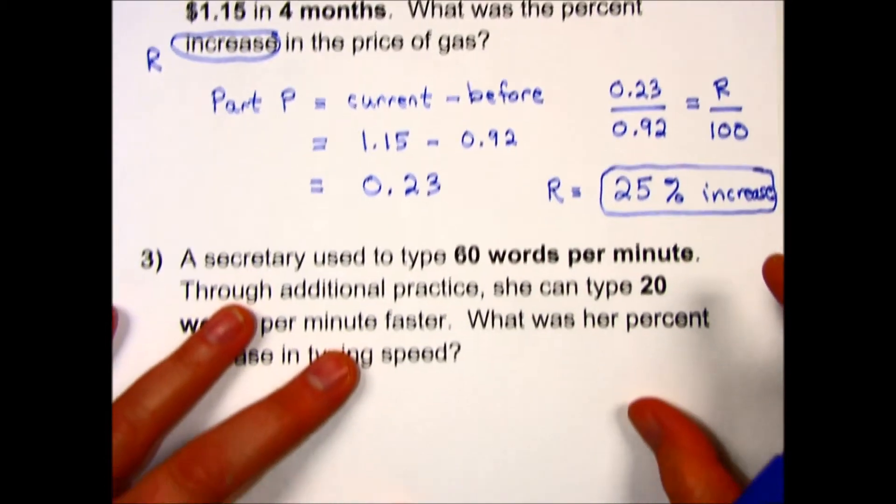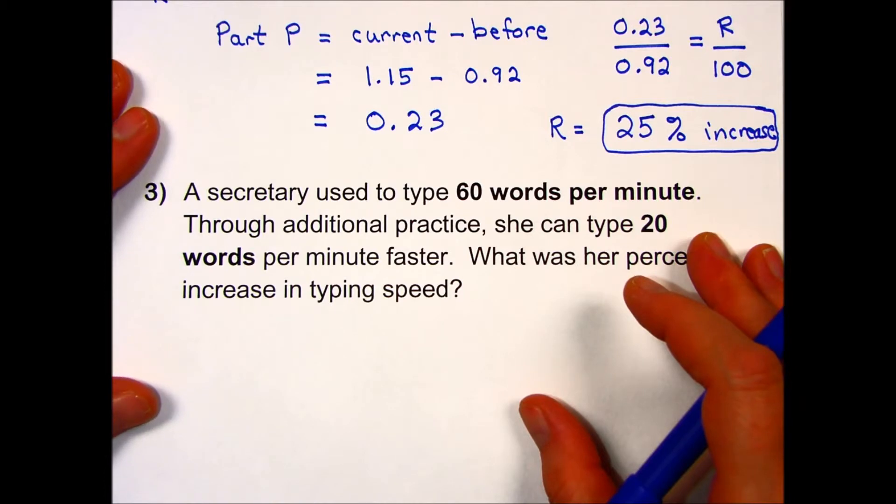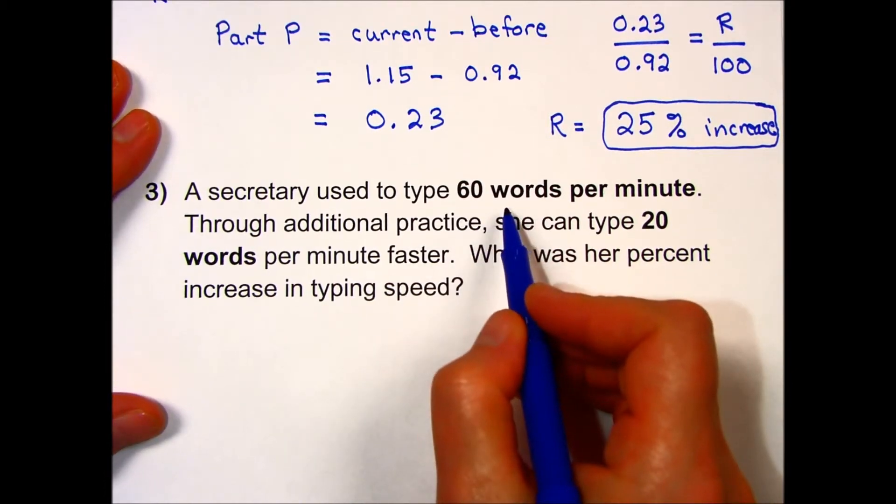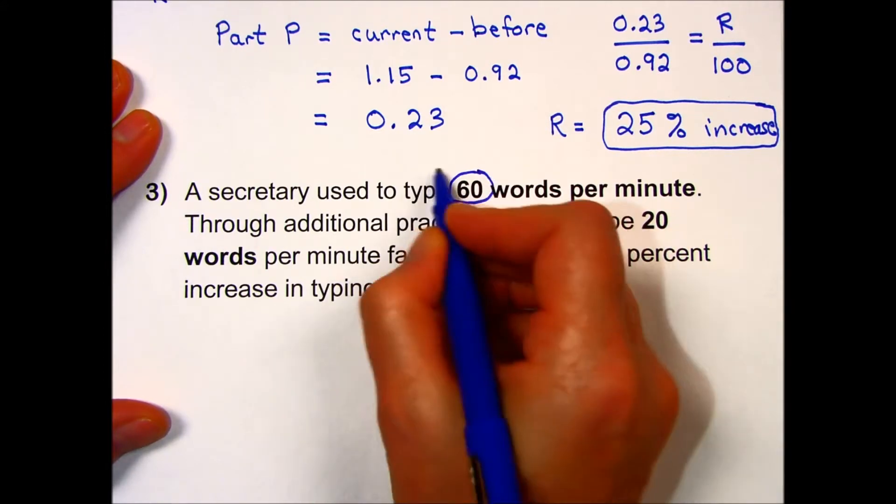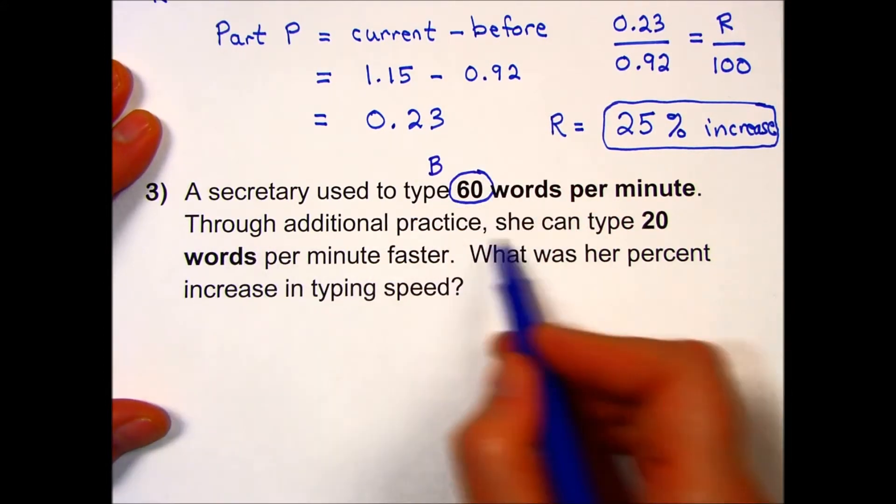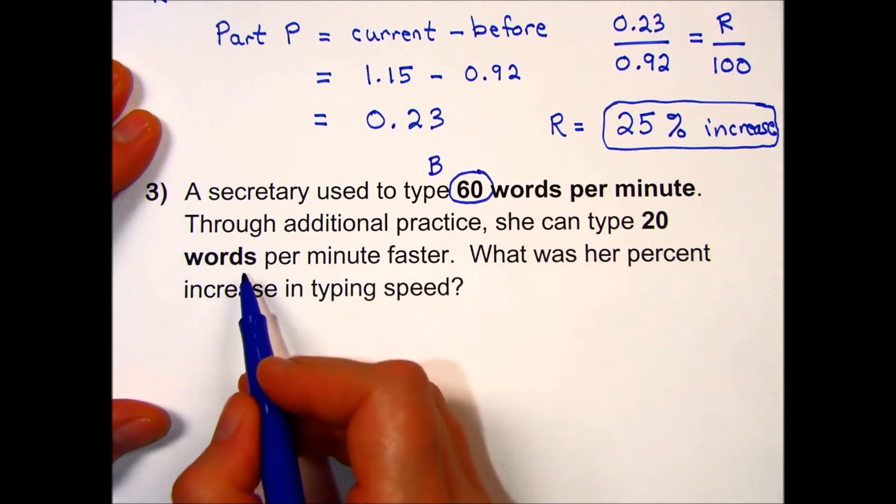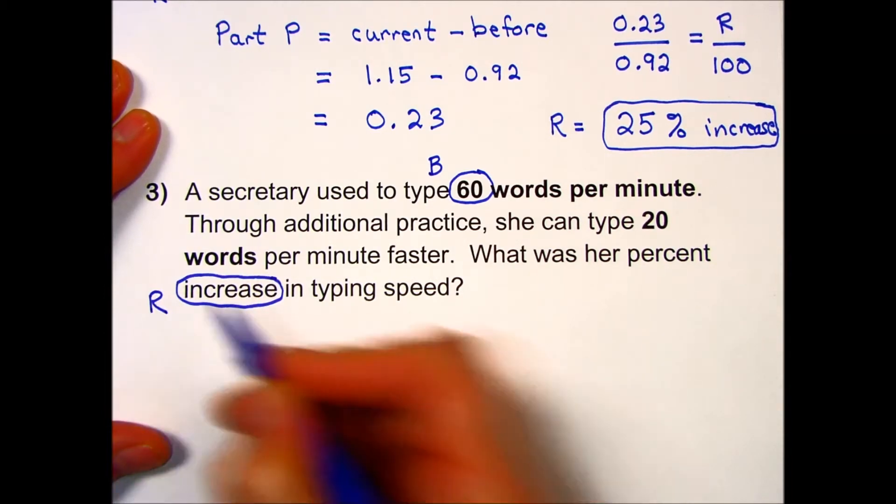Let's try one more together. Looks a little different. A secretary used to type 60 words per minute—that will be the base. What was her percent increase? The percent increase is the rate that I'm looking for.